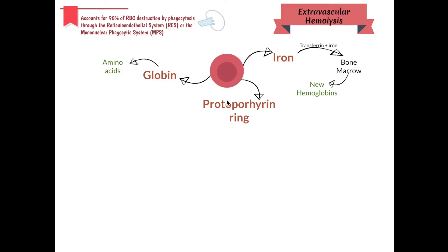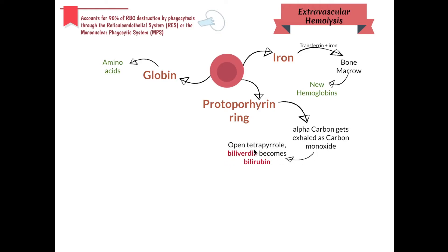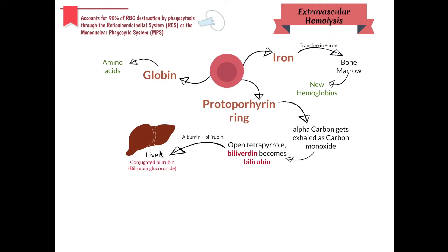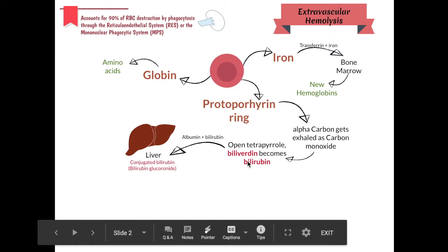For the protoporphyrin ring, the process is a little longer. The alpha carbon gets exhaled as carbon monoxide. What remains becomes an open tetrapyrrole called biliverdin, which then becomes bilirubin. Bilirubin gets picked up by albumin and travels into the liver.